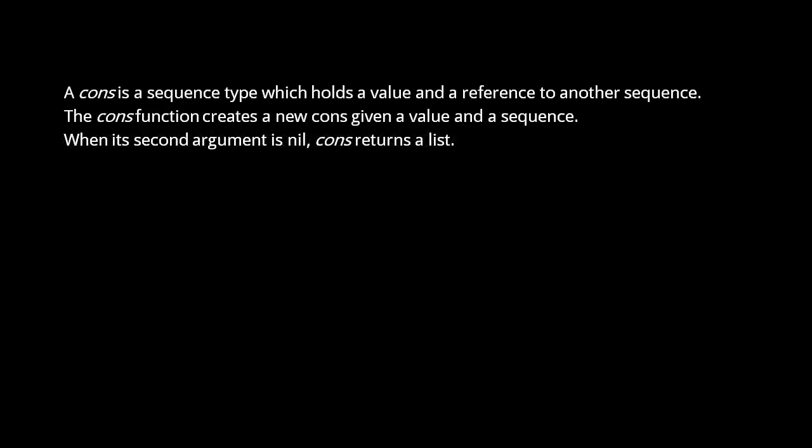The name cons comes from old dialects of Lisp, where it was short for construct, as in construct list. Over time, cons became a noun denoting a list-like data structure. In Clojure, a cons is an object that holds a value and references another sequence.